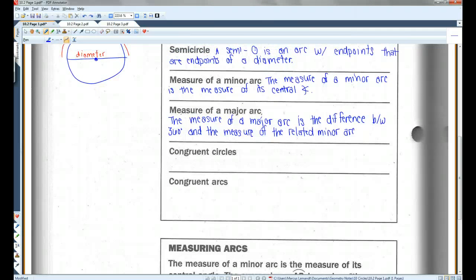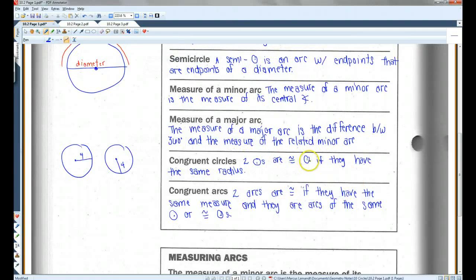All right. Congruent circles and congruent arcs. Two circles are congruent circles if they have the same radius. So, if you have this circle and it has a radius of 4, and then you have this other circle and it also has a radius of 4, then these circles are congruent.